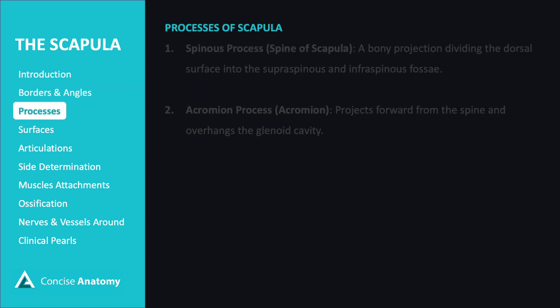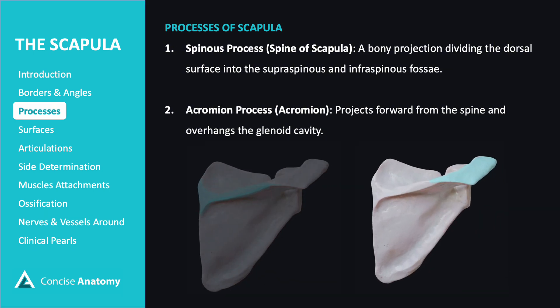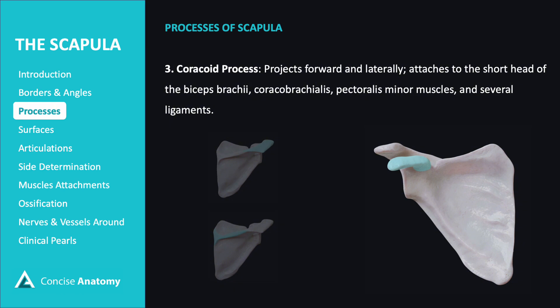The spinous process is a bony projection that divides the dorsal surface of the scapula into the supraspinous and infraspinous fossae. The acromion process projects forward from the spine and overhangs the glenoid cavity, providing an attachment point for muscles and ligaments. The coracoid process projects forward and laterally, serving as an attachment site for the short head of the biceps, coracobrachialis, pectoralis minor, and several ligaments, contributing to shoulder stability and movement.